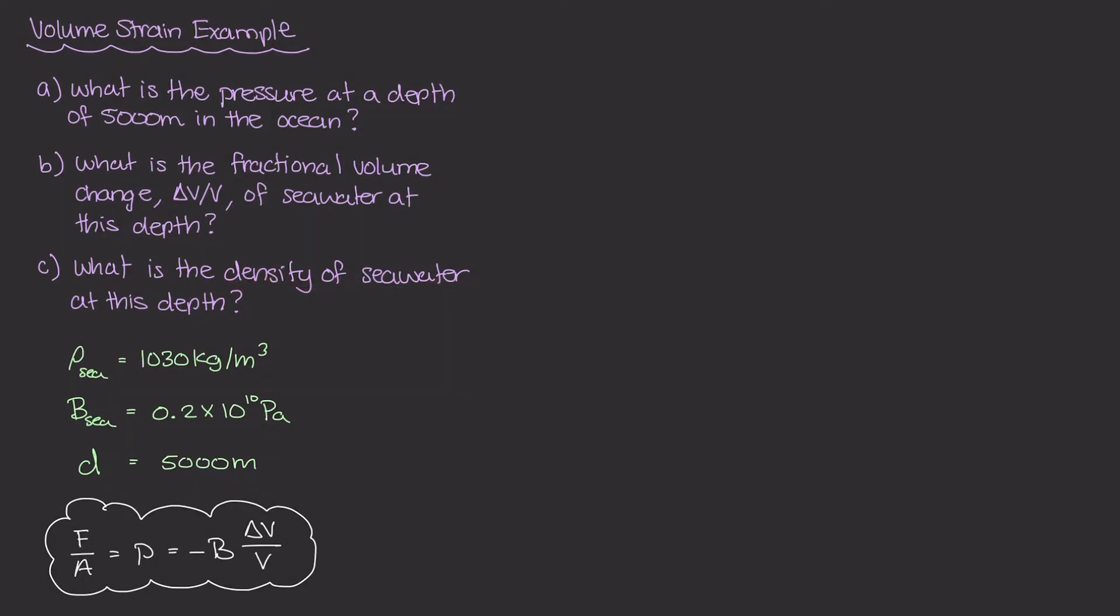So we've been studying bulk modulus and this relationship between volume stress and volume strain. We know that if we compress any volume of material, whether it's a liquid or a solid, it's going to compress and change volume by a very tiny amount, which we call delta V. We can use this bulk modulus to relate the volume stress to the volume strain and figure out what that change of volume is. I've written out a few more knowns here. We have the mass density of seawater, ocean water to be 1030 kilograms per meter cubed. We have the bulk modulus of seawater to be 0.2 times 10 to the 10th pascals or newton per meter squared. And then we have our depth of 5,000 meters. Let's go ahead and start answering these questions.